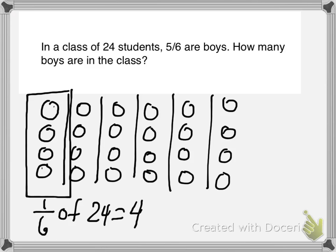We want to find what 5/6 of 24 is equal to. We can use the information that 1/6 of 24 equals 4 to help us. Because 5/6 of 24 is 5 groups, and we have 4 in one group, we multiply that by 5, which gives us 20. Therefore, there are 20 boys in the class.